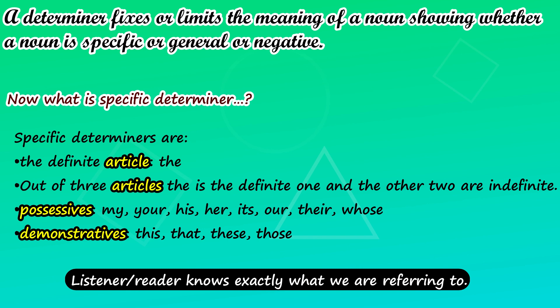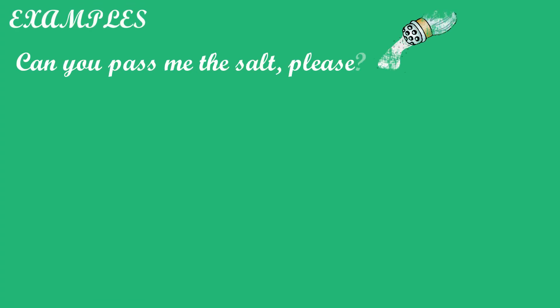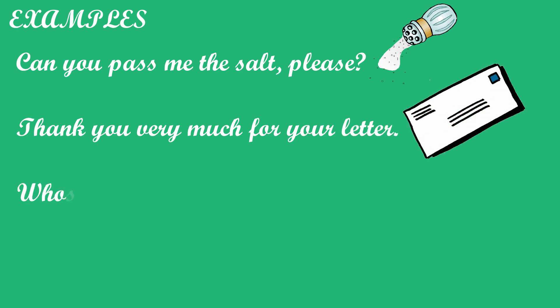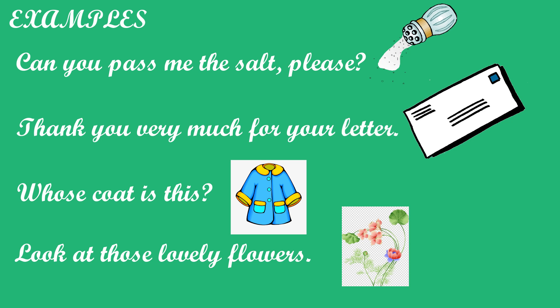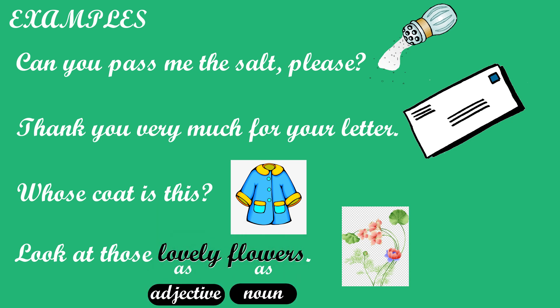Now let's have a look at these examples. Can you pass me the salt, please? Thank you very much for your letter. Whose coat is this? Look at those lovely flowers. In the first sentence, the determiner is the, referring to the noun salt. In the next sentence, the determiner is your, referring to the noun letter. Next, the determiner is whose, referring to the noun coat. And in the last sentence, those is the determiner, referring to the adjective plus noun.